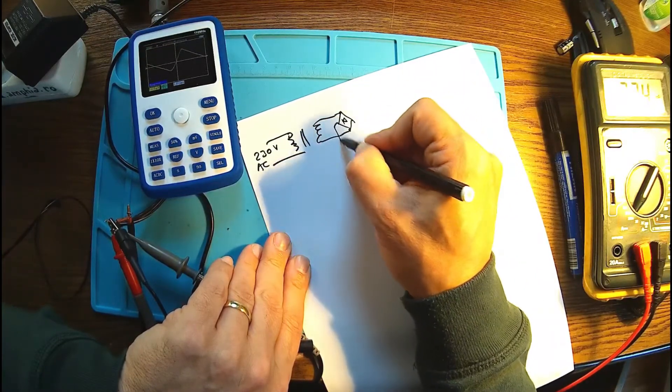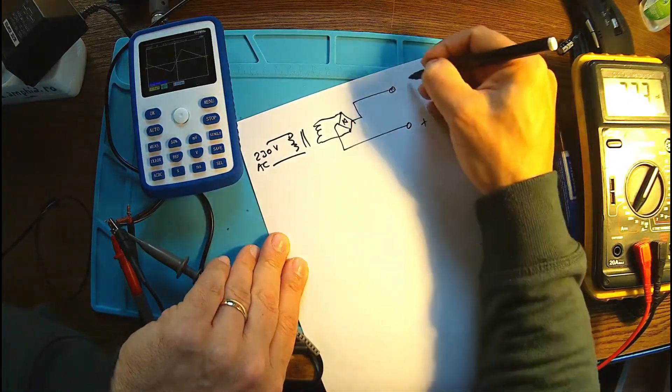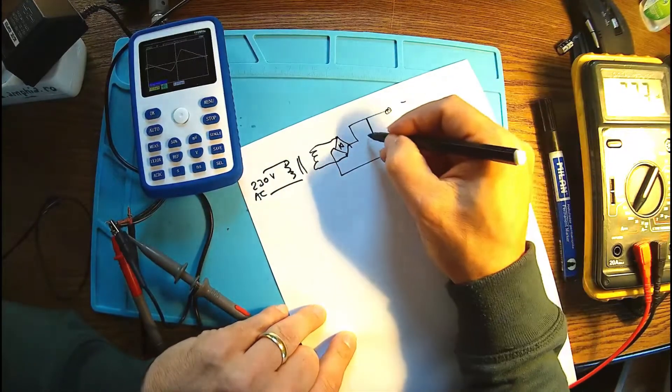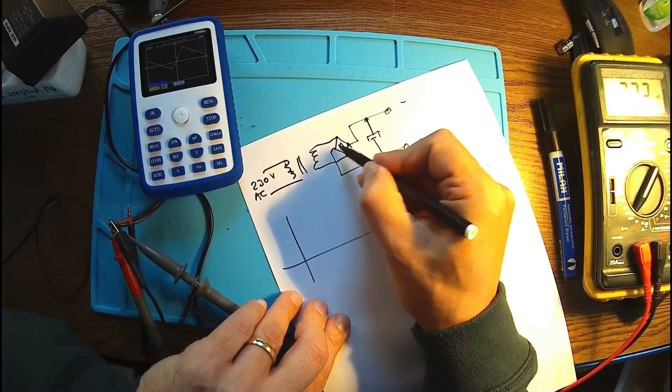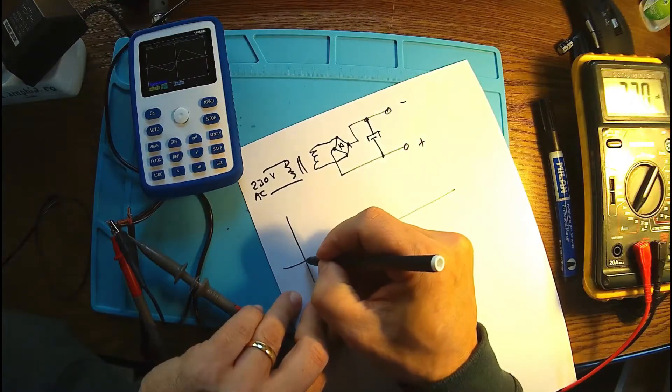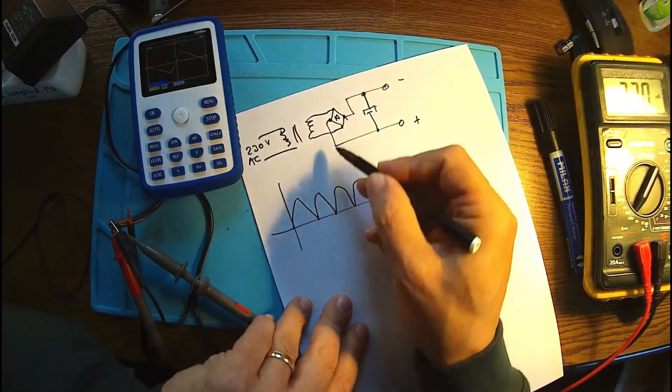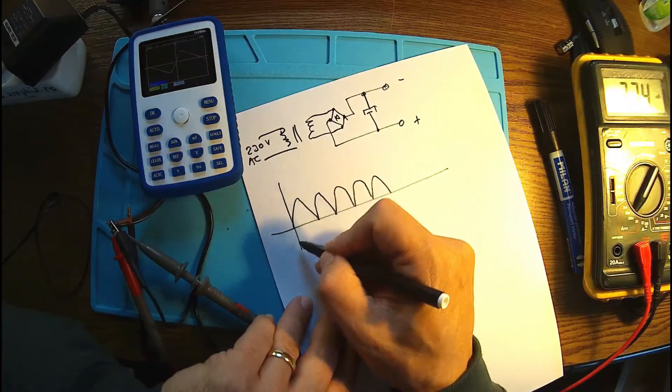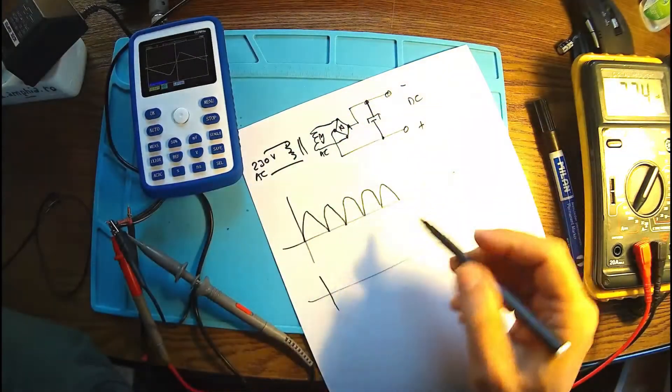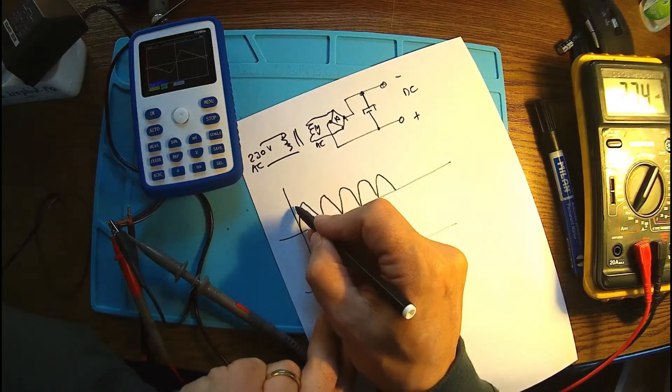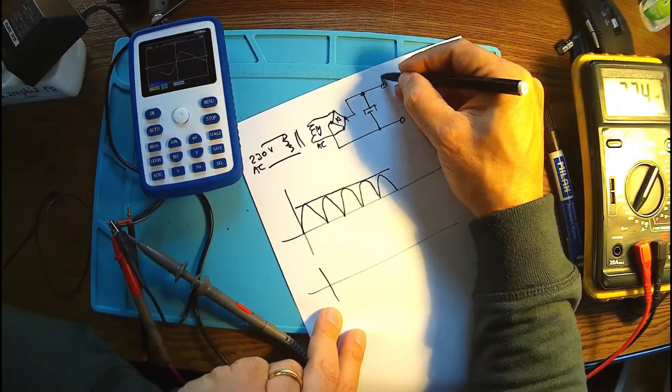It goes to a bridge like this. Of course, then we have plus and we have minus. Here, in these points, we're going to have a kind of wave like this. This is half of the sinusoid from the AC, let's say 14 volts AC. When we apply the capacitor, then the capacitor will start leveling the peaks.